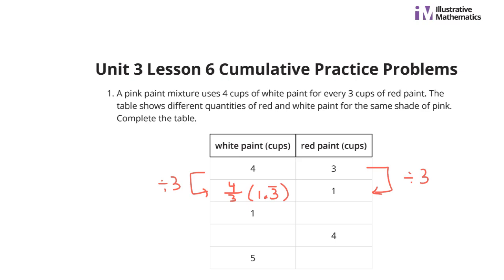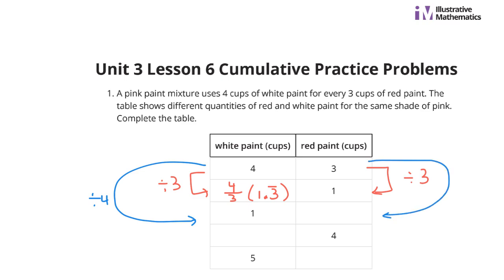You've got to have the bar over the 3 to symbolize that 3 goes on forever. Now, what about the 4? To get that down to a 1, we're dividing by 4. So we take 3 and divide by 4 to get 3 fourths.